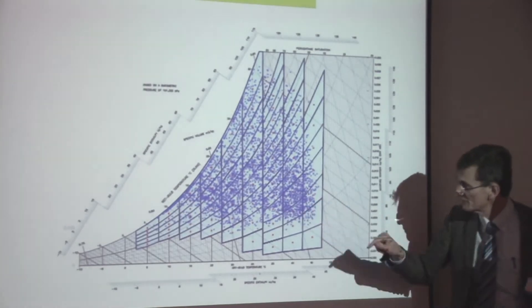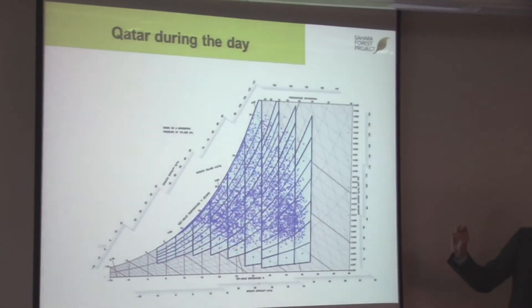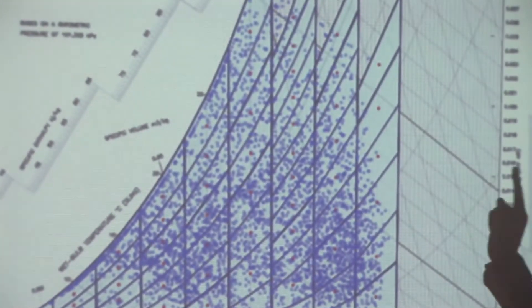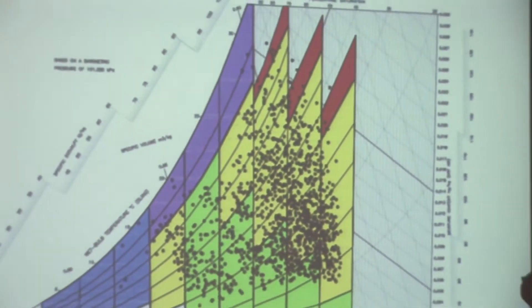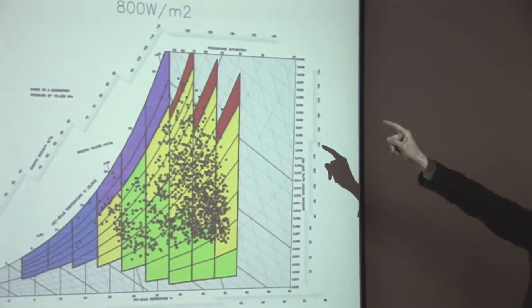Every one of these dots, the blue dots, is an hour during the day through a whole year. What Fordham's have done is modeled that to see what sort of effect the evaporative cooling can have at an insulation rate of 800 watts per square meter.